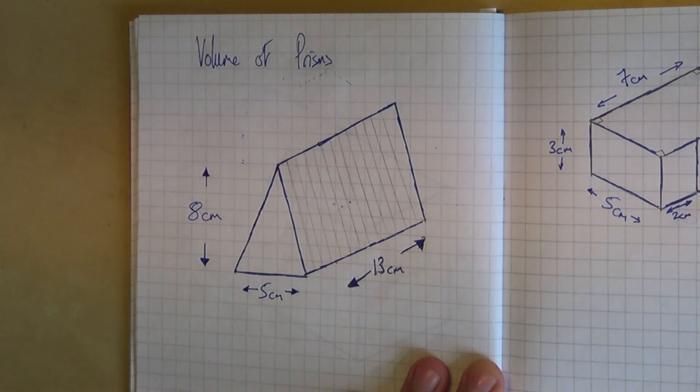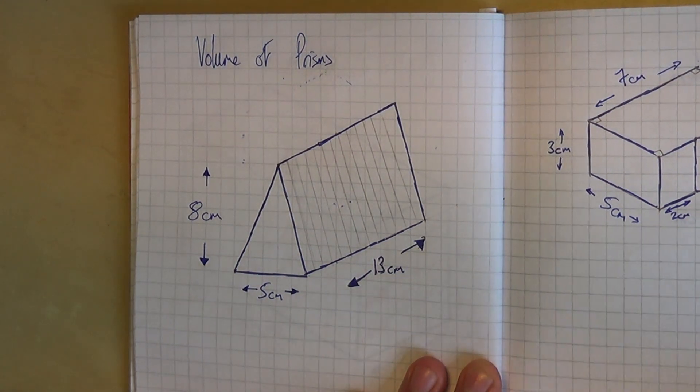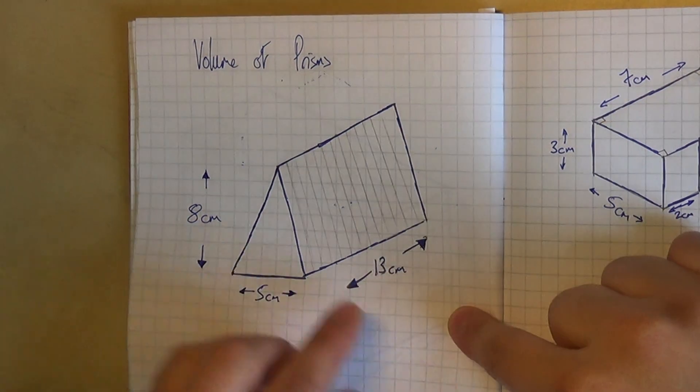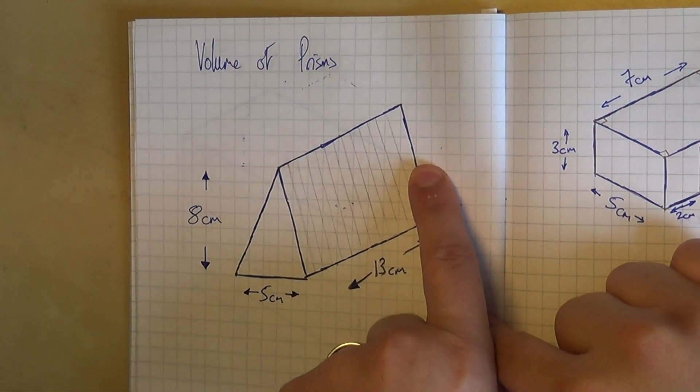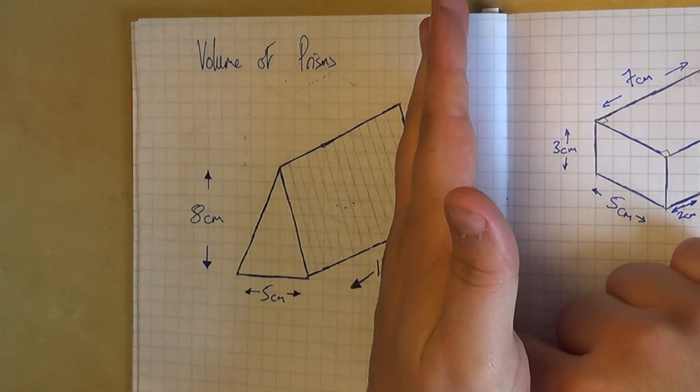Okay, we're looking at volume of prisms now. Prisms are a class of shape where they have something at the end, which is the same at the back, and in between it's joined by a rectangle.